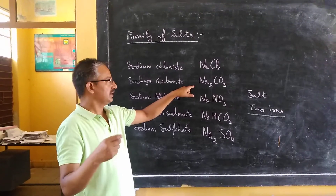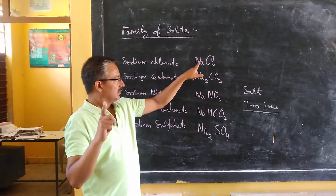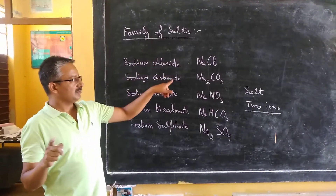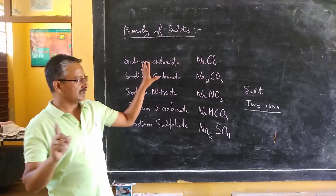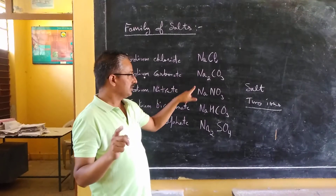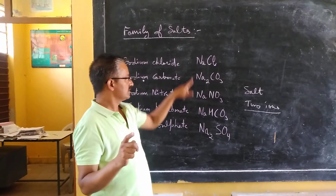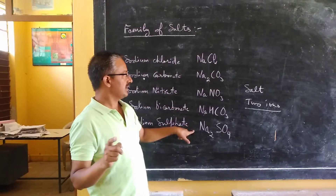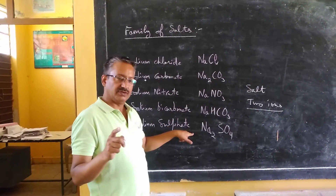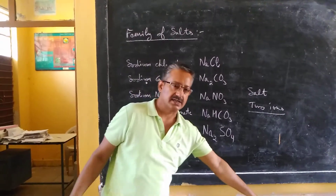We will term them as sodium salts. So, which family a particular salt belongs to — check for the ion which is common among those salts. In all these five salts, the sodium ion is common, so we will say these belong to the sodium family of salts.